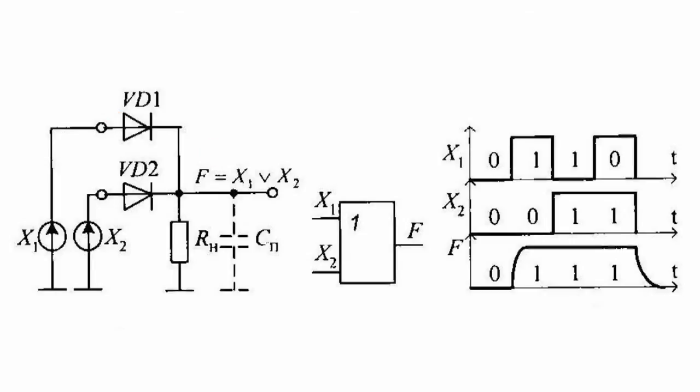The element's output usually has parasitic capacitance CP equal to 25 to 100 pF, which is why the duration of the output edge is extremely low, as the capacitance quickly charges from the source of input signals through the low forward resistance of the open diode, while the fall duration is large as the diodes are closed and the capacitance is discharged through the resistor RH.